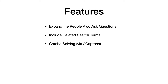The bot can also help you grab related search terms, which I find really useful. So the report will not only contain People Also Ask questions — you can also choose whether to include related search terms. After getting that list, you can run the bot again to get People Also Ask questions for those related search terms as well.